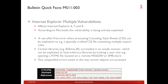Quick facts for MS11-003: This bulletin discusses Internet Explorer vulnerabilities. There were several vulnerabilities affecting all recent versions of Internet Explorer — versions 6, 7, and 8. According to Microsoft, the vulnerability is being actively exploited. One vulnerability type is a use-after-free when processing cascading style sheets, which we discussed in the last webinar. It can be exploited when a crafted cascading style sheet containing multiple import rules is loaded.